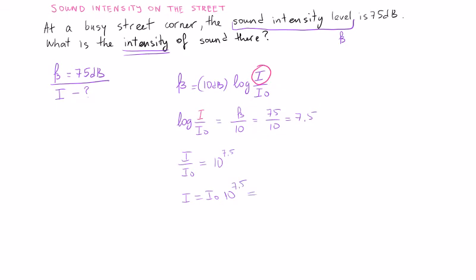I₀ is 1.0 times 10 to the negative 12 watts per meter squared. Multiplying by 10 to the 7.5, plug it into your calculator and we get 3.2 times 10 to the negative 5 watts per meter squared.